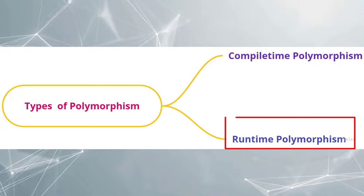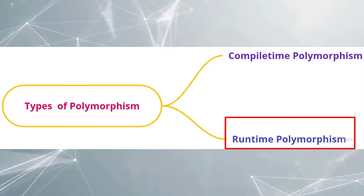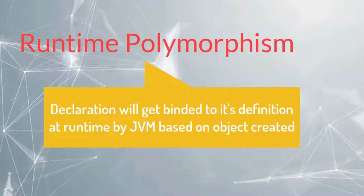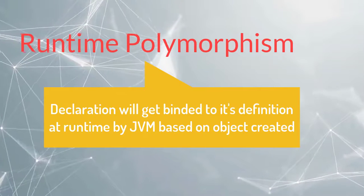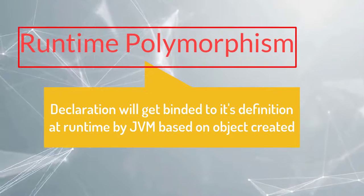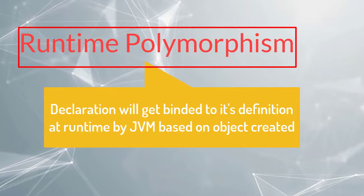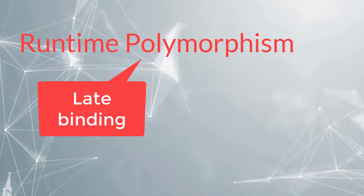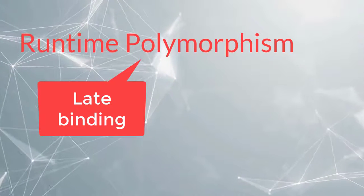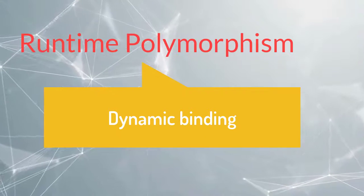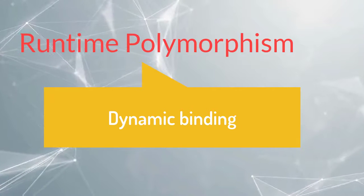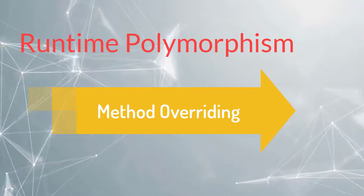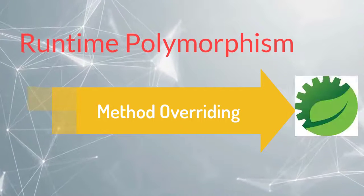Next, we'll discuss about the second type of polymorphism: runtime polymorphism. Here, the method declaration will get binded to its definition at the runtime by the JVM based on the object created. Since the binding happens at the runtime, it is called as late binding. Once the object is binded at the runtime, it can be rebinded. Hence, it is called as dynamic binding. The example for runtime polymorphism is method overriding.